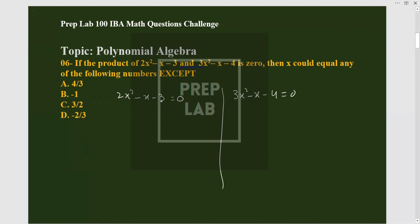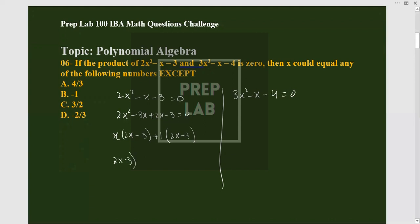For 2x²-x-3, we multiply 2 and -3 to get -6, then break -x into -3x+2x. This gives us -3x+2x-3, and factoring we get (2x-3)(x+1) = 0. So 2x-3=0 gives x=3/2, and x+1=0 gives x=-1.